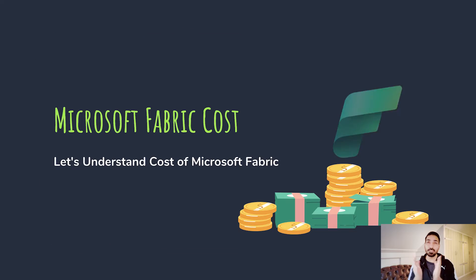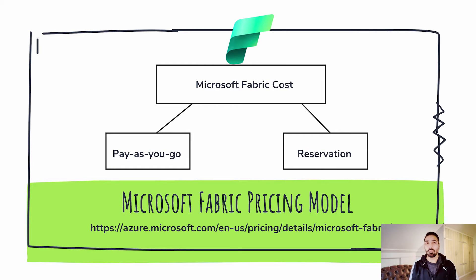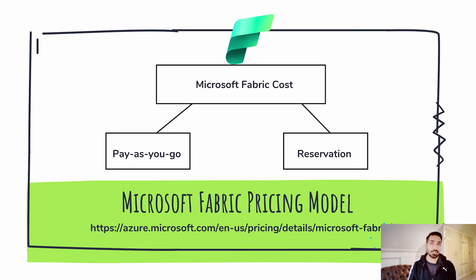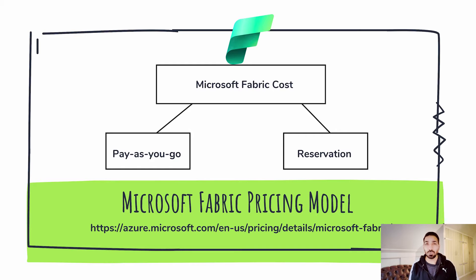First of all, Microsoft Fabric cost has been divided into two different parts: you can pay pay-as-you-go, or you can also reserve it. Reservation means you reserve Microsoft Fabric for one year or more and you get a discount — in this case the discount can be up to 40%. If you reserve Microsoft Fabric licenses within your organization you can get a lot of discounts; otherwise pay-as-you-go is available but it's going to be more expensive.